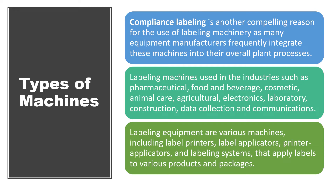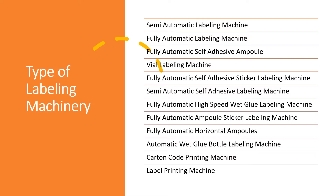Labeling equipment includes various machines such as label printers, label applicators, printer applicators, and labeling systems that handle the applying process to different products. You can segregate labeling machinery into these categories: semi-automatic labeling machines, which can be further differentiated into semi-automatic self-adhesive labeling machines; fully automatic labeling machines; fully automatic self-adhesive vial and ampule labeling machines; fully automatic ampule sticker labeling machines; horizontal ampule or wet glue bottle labeling machines; and carton code printing machines.